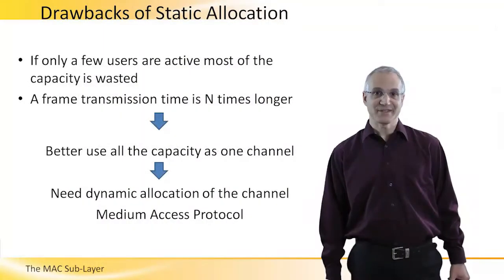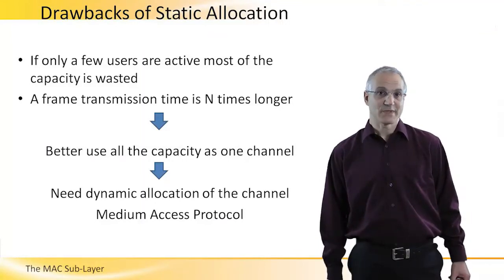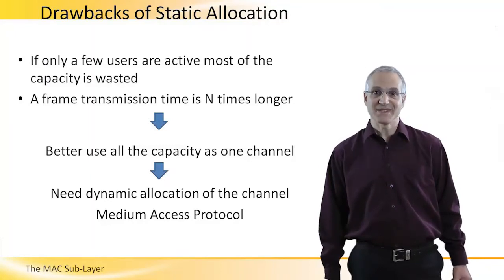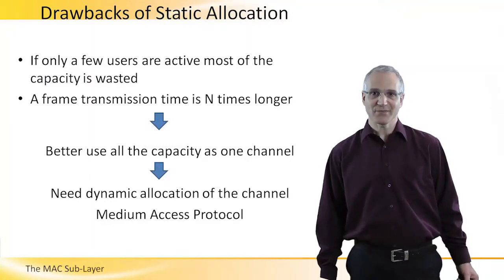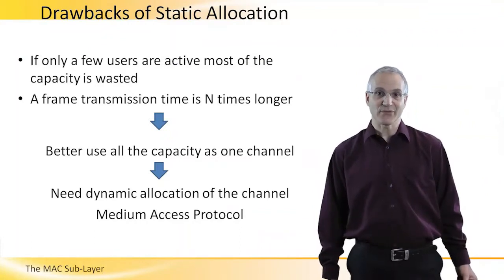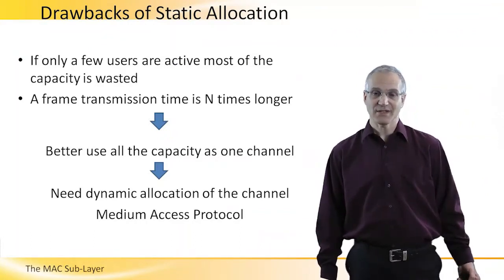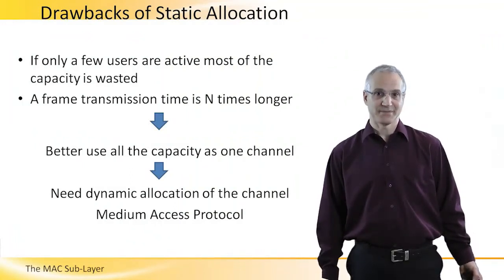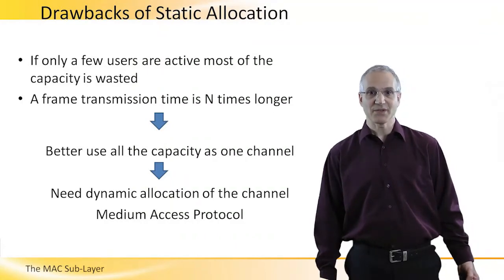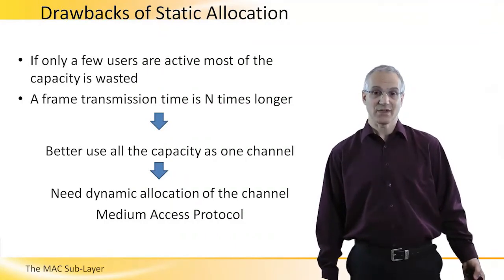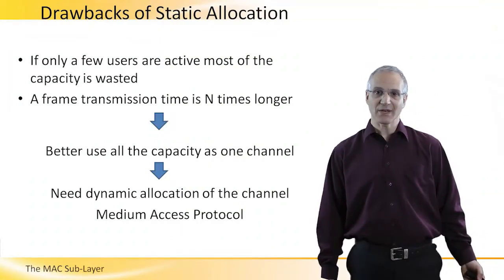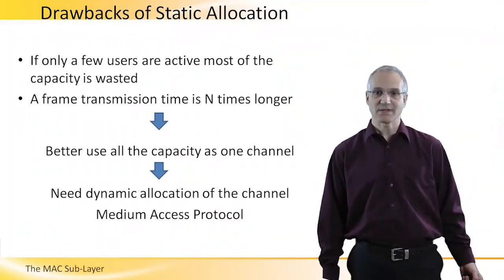Static allocation is simple, but not very efficient. For example, if only a few of the users are active most of the time, most of the capacity is wasted. Another problem is that since each user is using only a fraction of the channel capacity, each frame transmission takes N times longer. Thus, we better use all the capacity at once as one channel. And then we need to solve the problem of dynamically allocating the channel to the users. This is exactly why we have the medium access protocols.